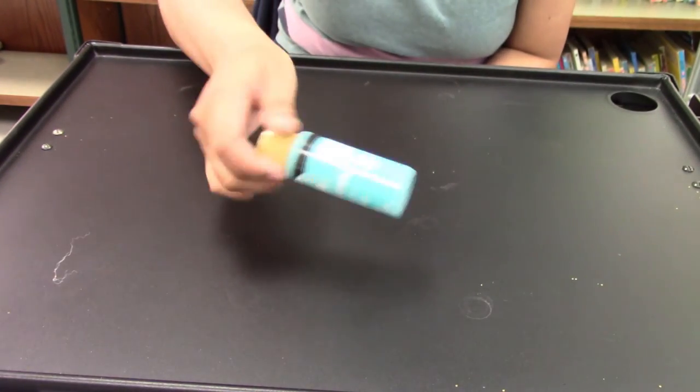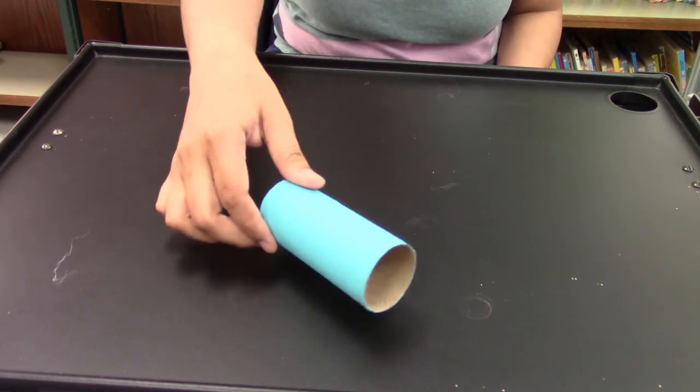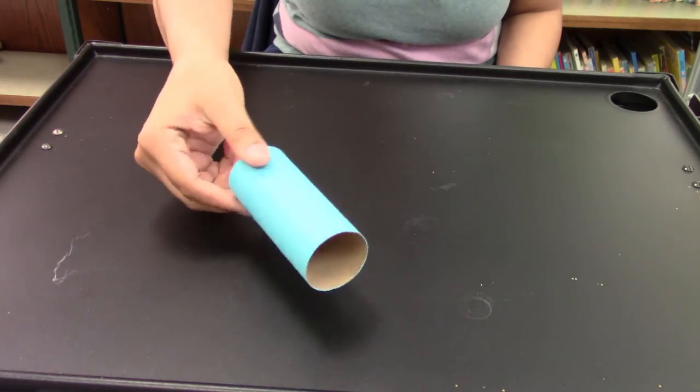Then you're going to use your blue paint and paint the outside of your paper towel tube. We've already done that here.